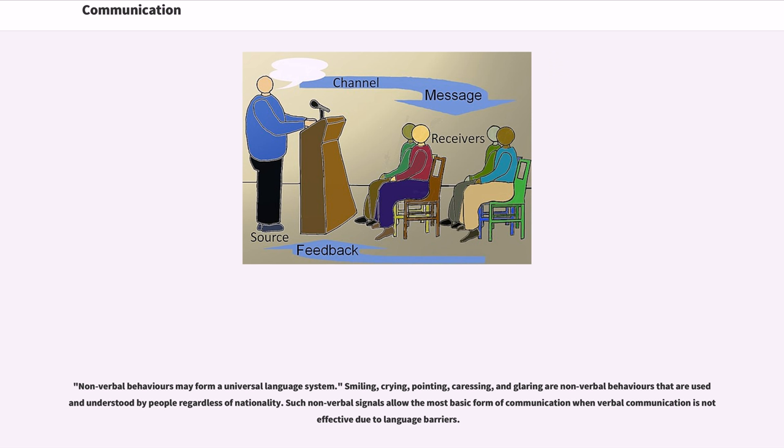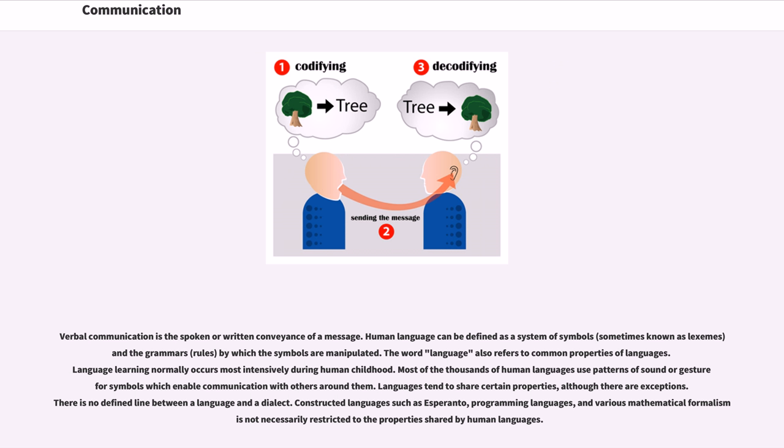Verbal communication is the spoken or written conveyance of a message. Human language can be defined as a system of symbols, sometimes known as lexemes, and the grammar rules by which the symbols are manipulated. The word language also refers to common properties of languages. Language learning normally occurs most intensively during human childhood. Most of the thousands of human languages use patterns of sound or gesture for symbols which enable communication with others around them. Languages tend to share certain properties, although there are exceptions. There is no defined line between a language and a dialect.